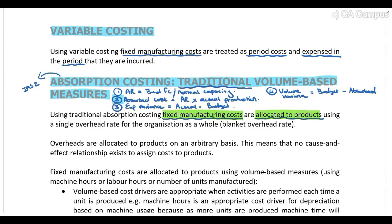It's important to note that when we calculate this allocation rate, we calculate a single overhead rate for the organization as a whole. We take the total budgeted fixed manufacturing costs for the company and calculate one single overhead rate. Please also note that overheads are allocated to products on an arbitrary basis — or in other words, on a random basis.